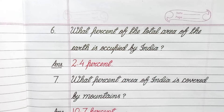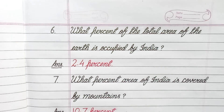Question number 6: What percent of the total area of the earth is occupied by India? Answer: 2.4 percent.